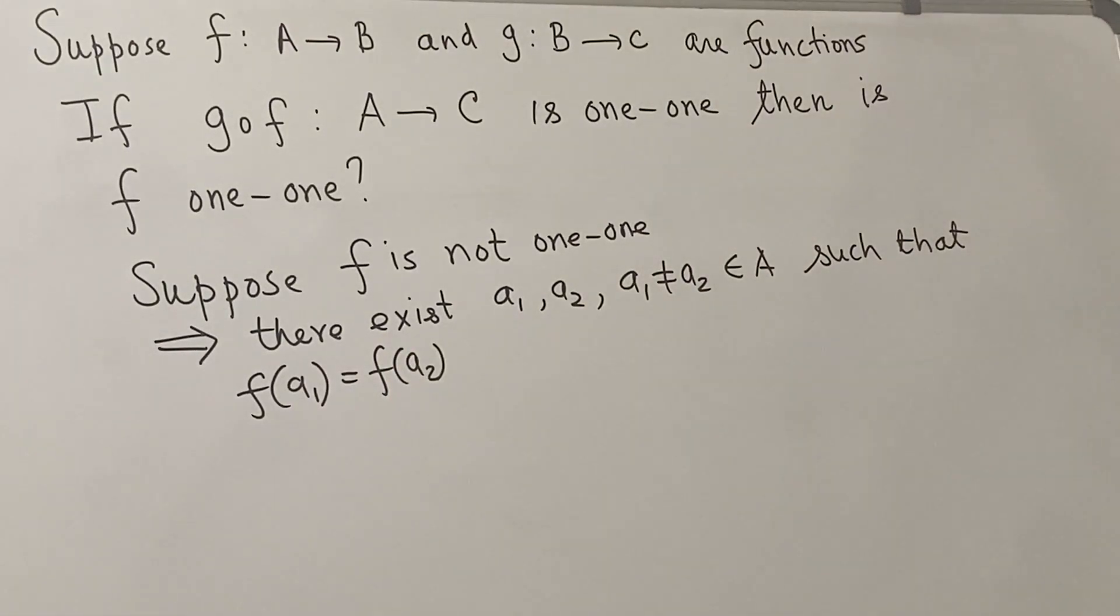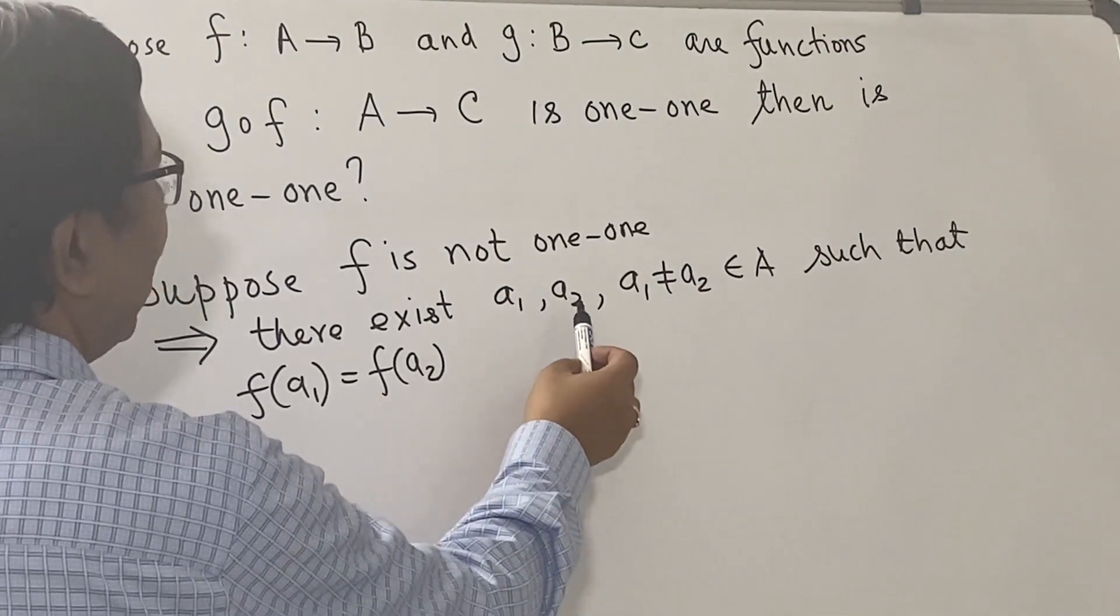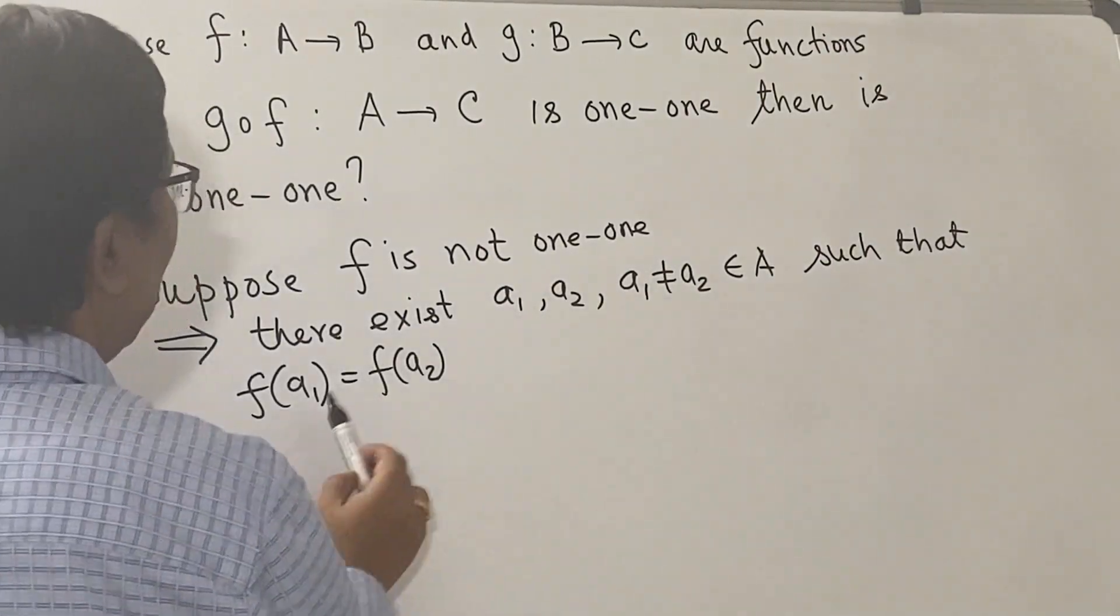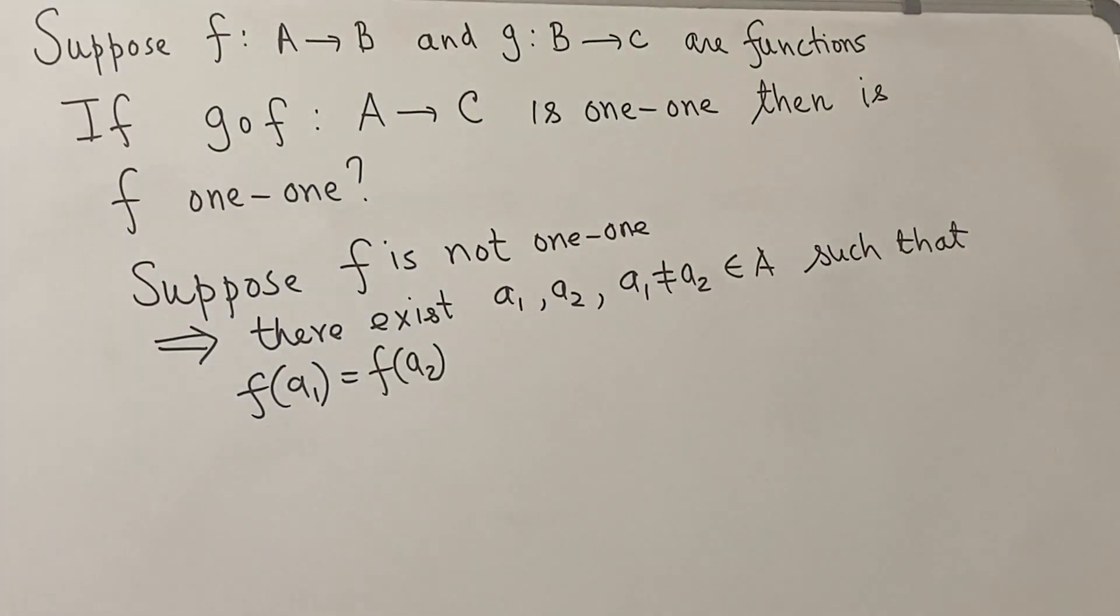Since f is not one-to-one, there must exist a pair of elements a₁, a₂ such that they are not equal but their images are equal.